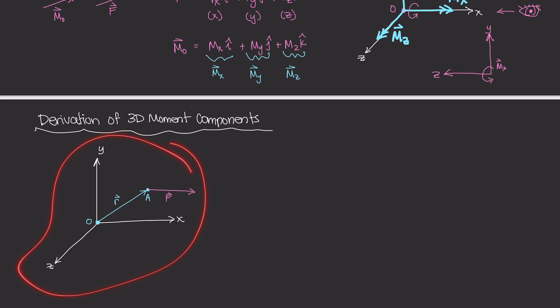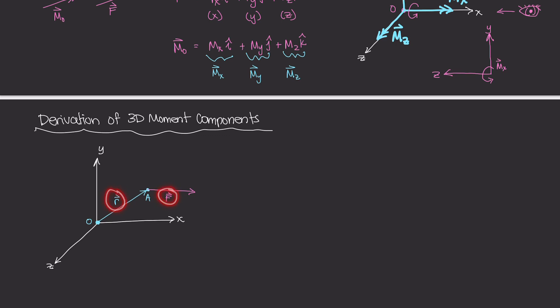We're going to derive these values — mx, my, and mz — symbolically, so you understand how to apply this to numerical examples. The very first thing we need to do is project each position vector and force vector into its three-dimensional components along x, y, and z. So let's start with our position vector.